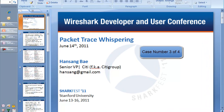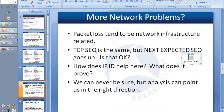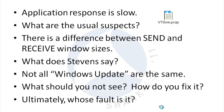Alright, let's take a look at the next problem: application is slow. We get this call day in and day out. Something is slow — it could be the network, it could be congestion, it could be a lot of things. So there are things that you can do with nothing but packet traces to rule out certain things.